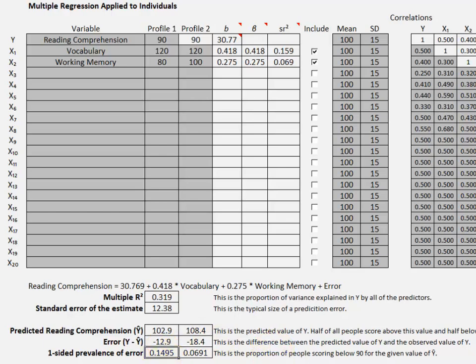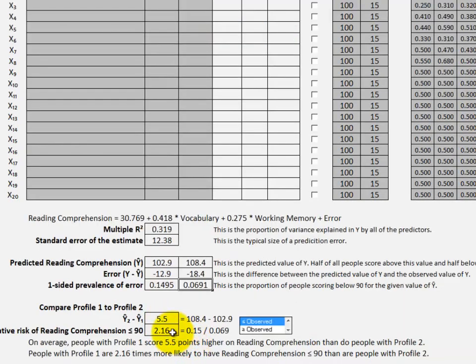With the weakness, the prevalence is not very high, it's almost 15%. Without the weakness, it's almost 7%. The size of the error has changed by 5.5 points. That is, 18.4 and 12.9 are 5.5 points apart. So the error has shrunk.